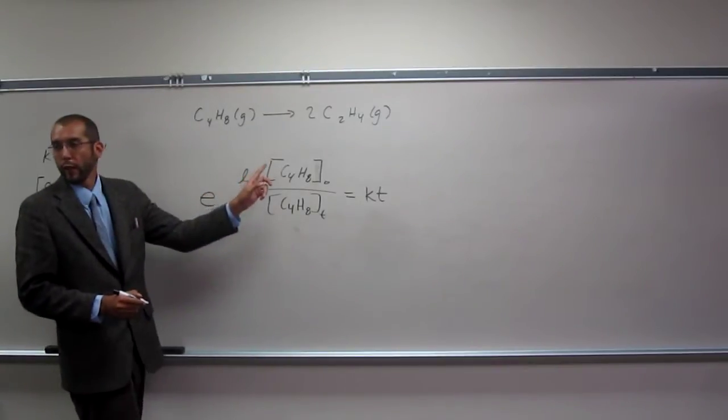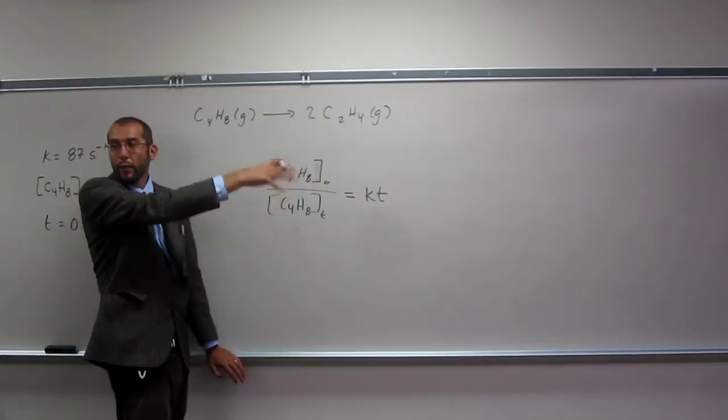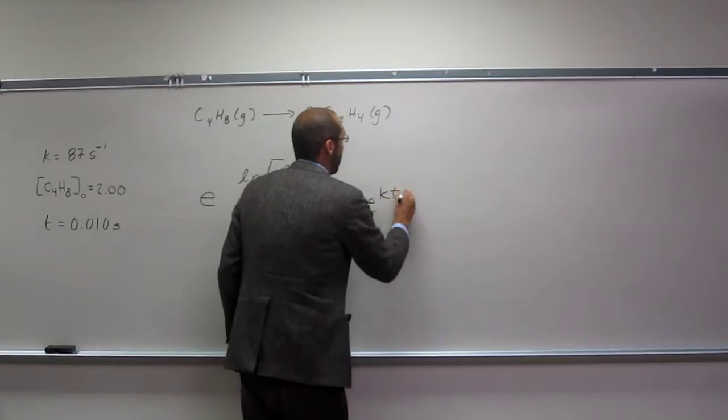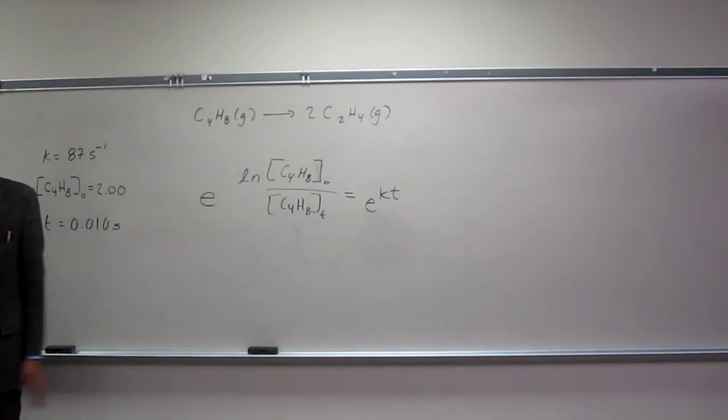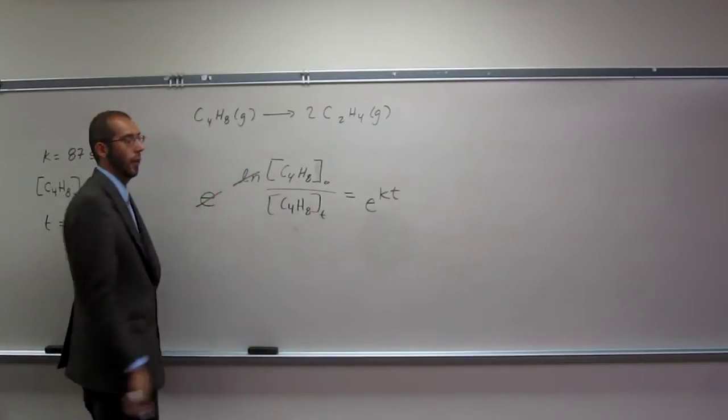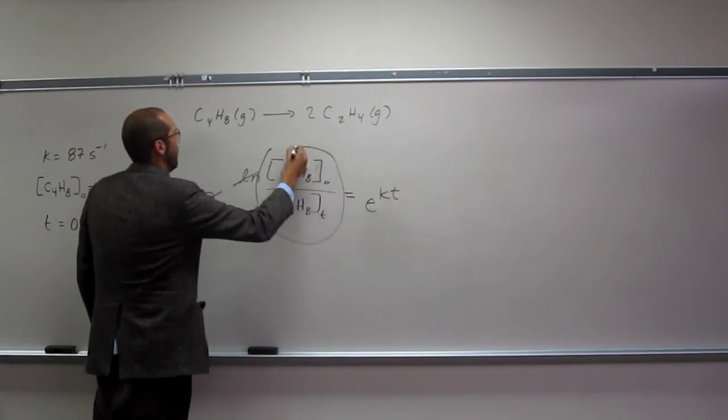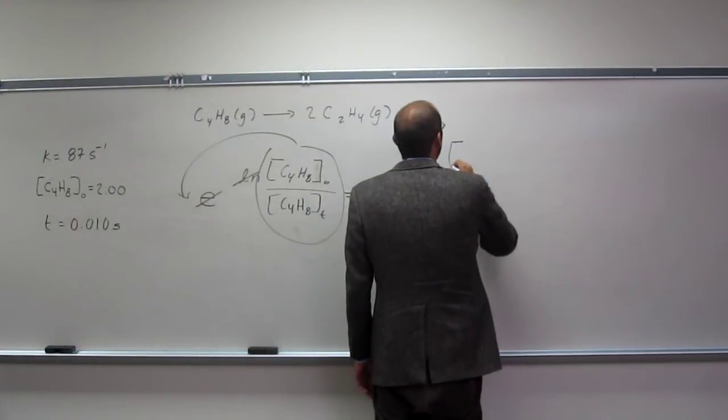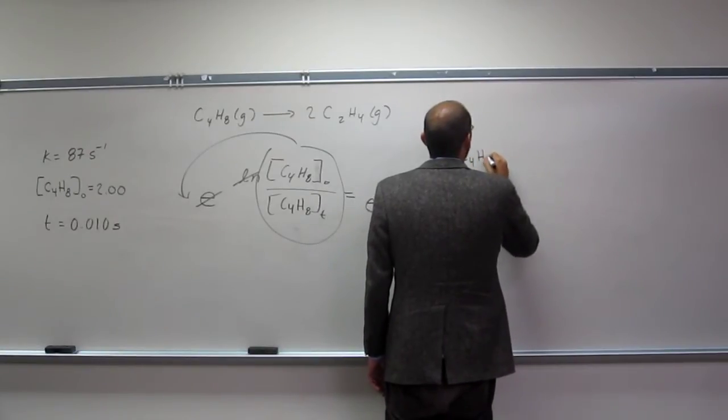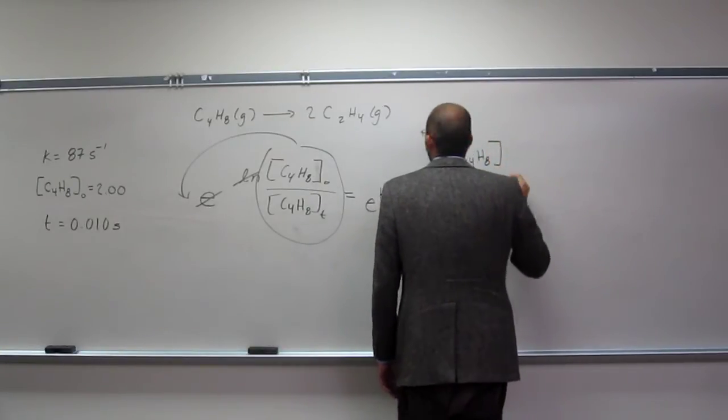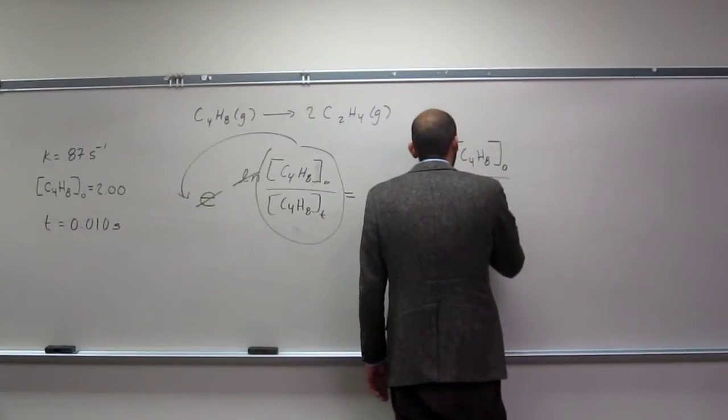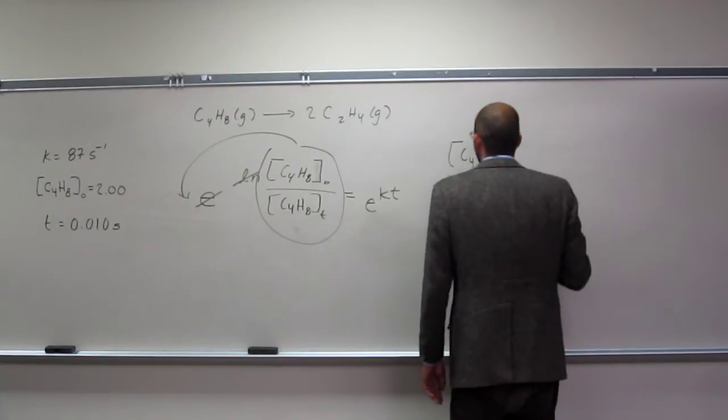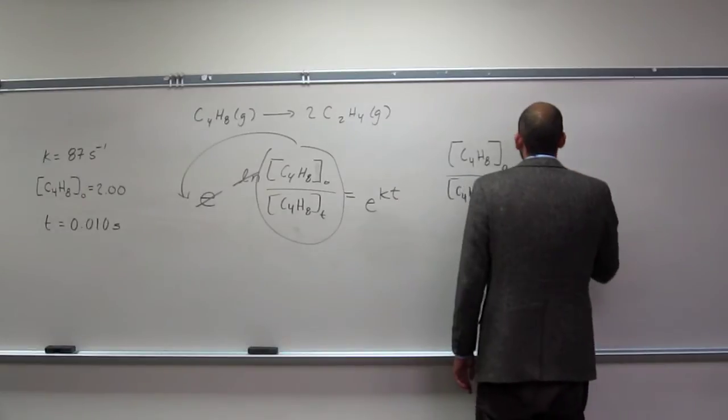Yeah, E to the ln, right? So, what we do to one side, we've got to do to the other side. So, this is going to be E to the KT. Is everybody okay with me just erasing? So, that cancels with that, and all of this comes down here. So, what are we going to get? We're going to get C4HAO divided by C4HAT equals EKT.